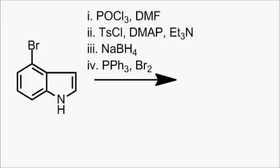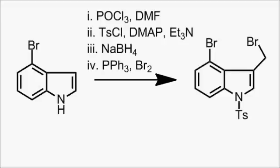Sodium borohydride reduced the aldehyde to an alcohol, and that was displaced with bromine and triphenylphosphine to give this bromide. The bromide was then reacted with this dithiane.